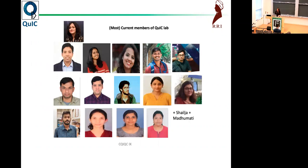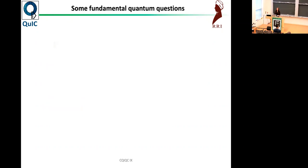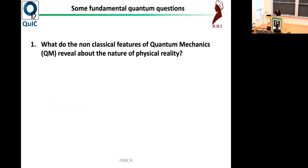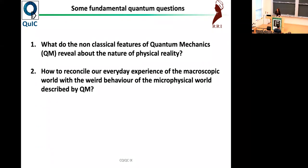Starting with some fundamental quantum questions. What do the non-classical features of quantum mechanics reveal about the nature of physical reality? A question perhaps we have not asked in this conference so far, but a question worth pondering about. This everyday experience that we have of what we may call the macro-physical world, or the world that you and I belong to, how does it reconcile with the weird behavior of quantum mechanics? To what extent is it possible to test quantum mechanics in the macro limit?